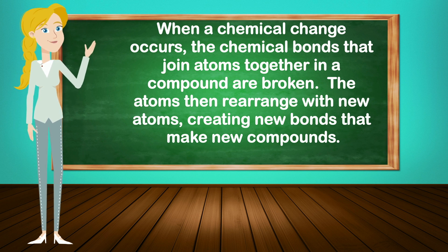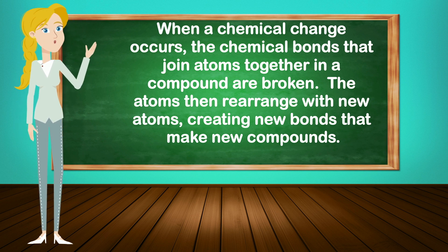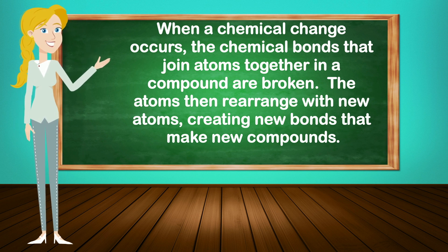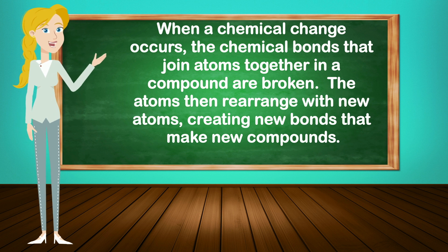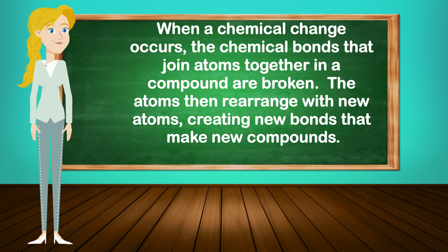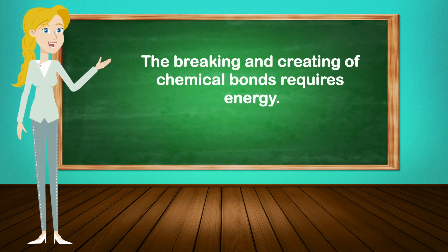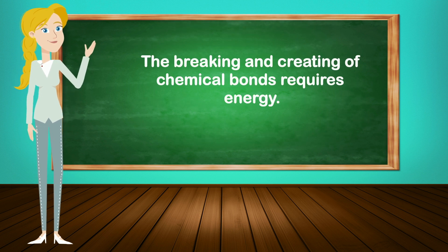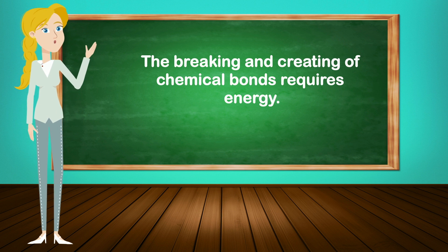When a chemical change occurs, the chemical bonds that join atoms together in a compound are broken. The atoms then rearrange with new atoms, creating new bonds that make new compounds. The breaking and creating of chemical bonds requires energy.